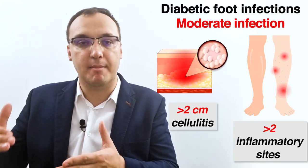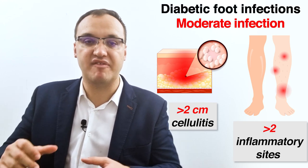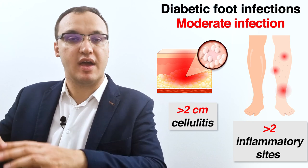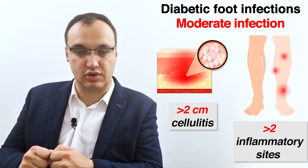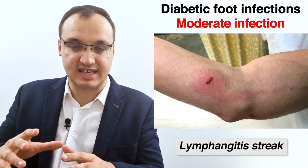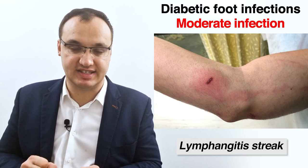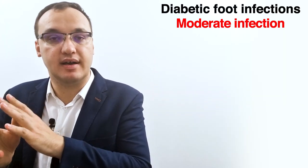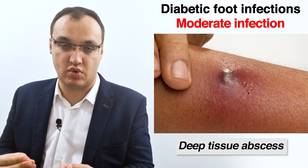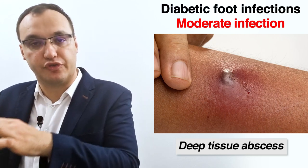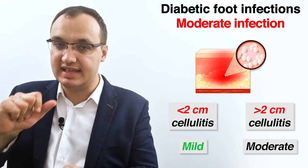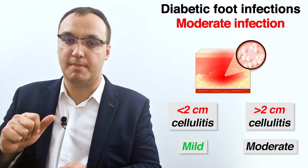For moderate infection, we have more than two centimeters of cellulitis, inflammatory signs, lymphangitic streaks, and possibly a deep tissue abscess. Remember the two-centimeter rule of cellulitis: less than two centimeters is mild, more than two centimeters is moderate.